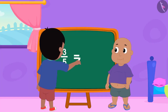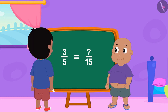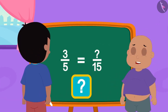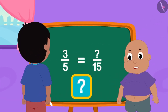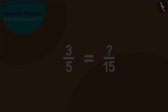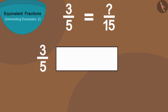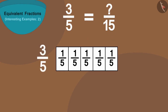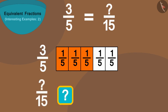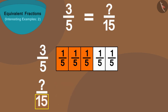This is Raju's next fraction. Children, can you find this fraction? Let's find it using a different shape. We can show this fraction by dividing a strip into five equal parts and coloring three parts in it. Now how many parts are there in its equivalent fraction? Fifteen.